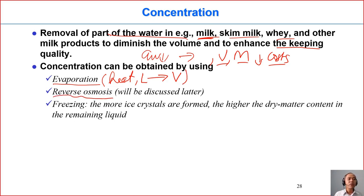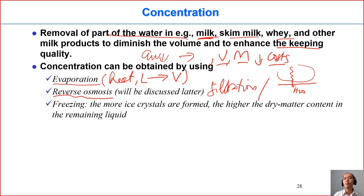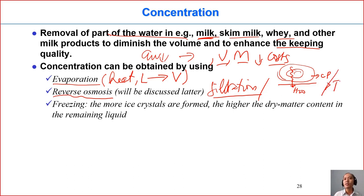Concentration can also be obtained by reverse osmosis filtration. We use a membrane that only allows water to pass through, while all remaining components are retained. So we remove water by filtration and get a concentrated product on the other side. When we use reverse osmosis, we normally don't have to use high temperature, so we maintain better sensorial and nutritional quality compared to the evaporation method.